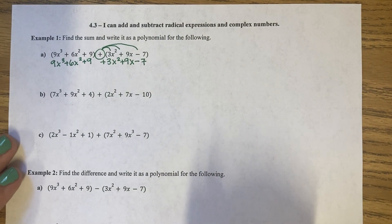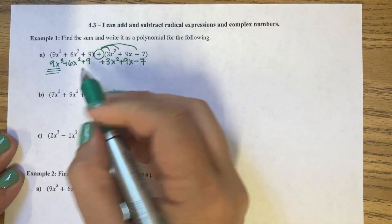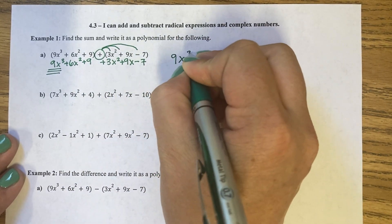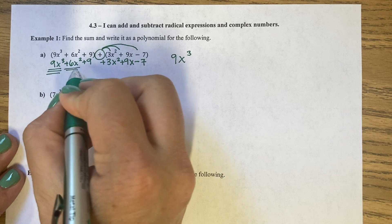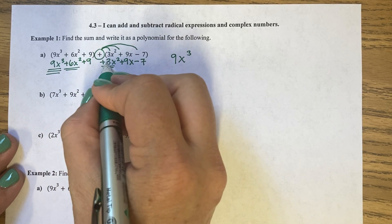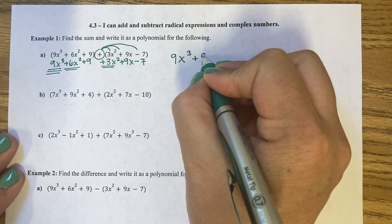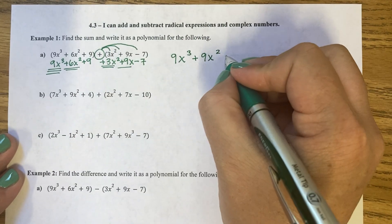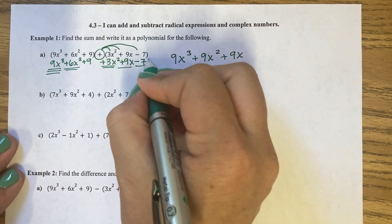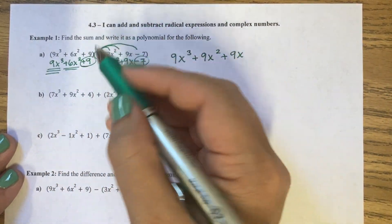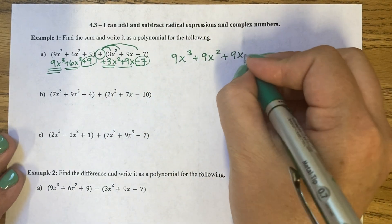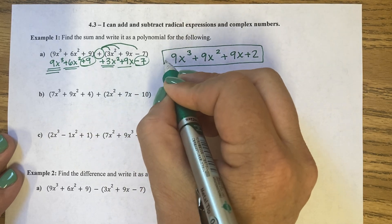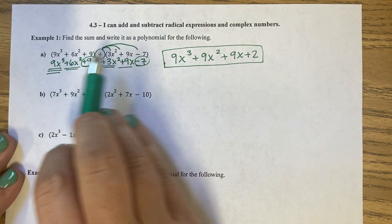We then combine like terms. This one is cubed — I look for any other cubes, and there are none. So 9x cubed. Then I have squares: 6 plus 3 makes 9x squared. Then I have a single x. And I have a minus 7 and a plus 9 — so 9 minus 7 is a plus 2. This has been simplified; we've found the sum of the two polynomials.